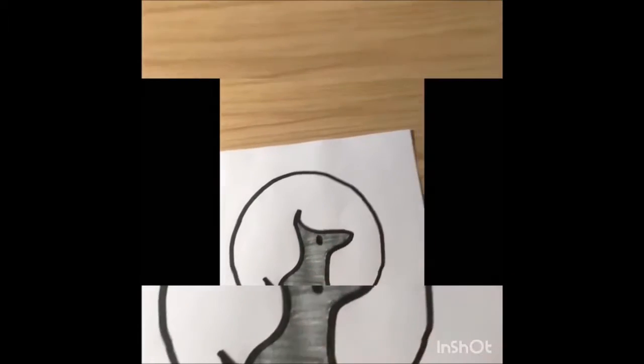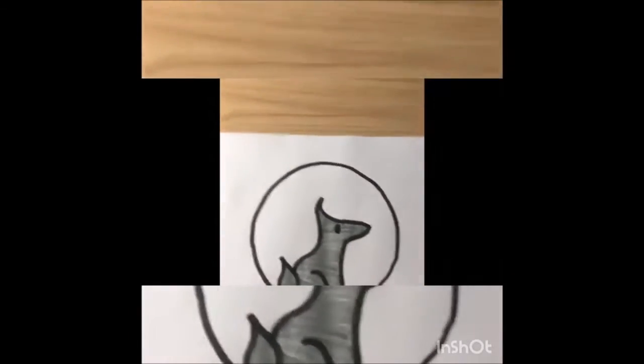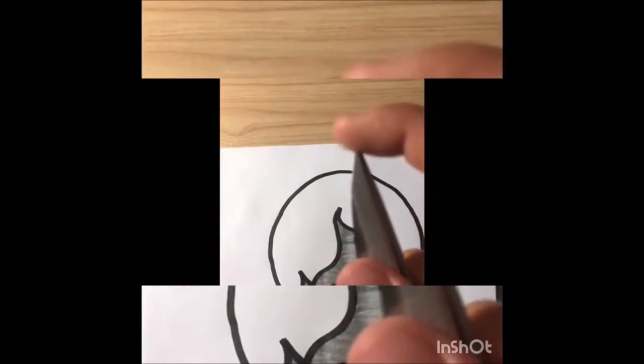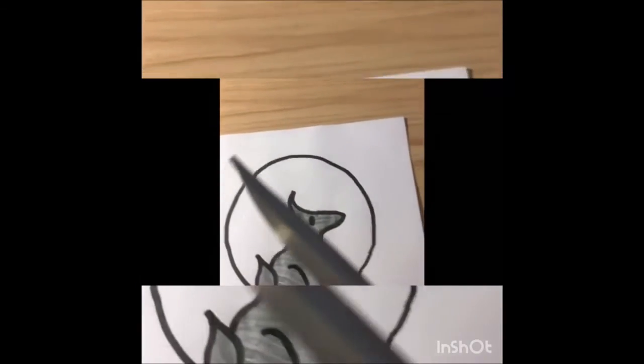E poi ovviamente dobbiamo ritagliarlo prendendo le forbici. E lo tagliamo così. Ci sono due parti uguali perché il foglio era piegato.